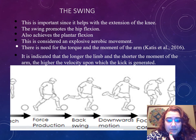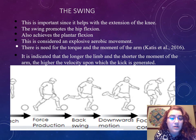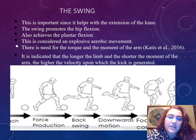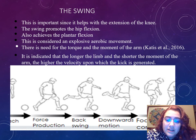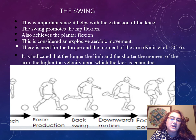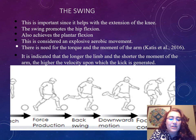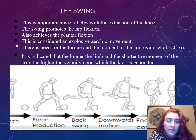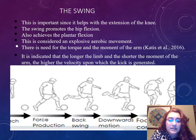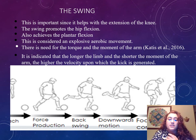Next we have the actual swing. This is important since it helps with the extension of the knee. The swing does promote hip flexion as well, but it also achieves the plantar flexion. This is what we would call your explosive aerobic movement. There is need for the torque and the moment of arm, and that's because it's indicated that the longer the limb and the shorter the moment of the arm, the higher the velocity upon which the kick is generated.